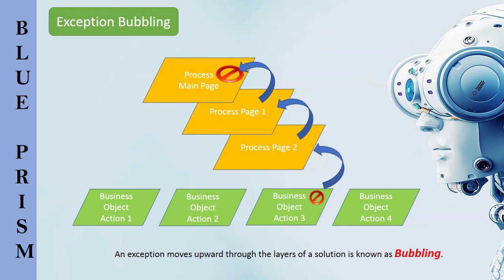An exception will bubble upwards until it is handled, and if it is not handled it will eventually bubble up to the main page of the process and cause it to fail. We can use bubbling to our advantage as we don't have to catch an exception straight away — we can let it bubble up and handle it at a higher level in the hierarchy.